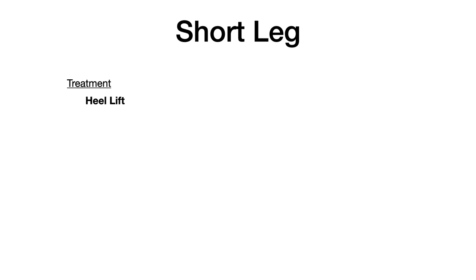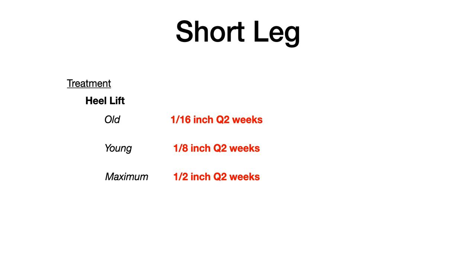The treatment for short legs is always a heel lift, placed on the side of the short leg to even out the discrepancy. For dosing: old and fragile patients can receive 1/16 inch every two weeks; young and strong patients can receive 1/8 inch every two weeks. The maximum heel lift is 1/2 inch. Don't worry about other details beyond these measurements — this is the most straightforward way to approach heel lift treatment.